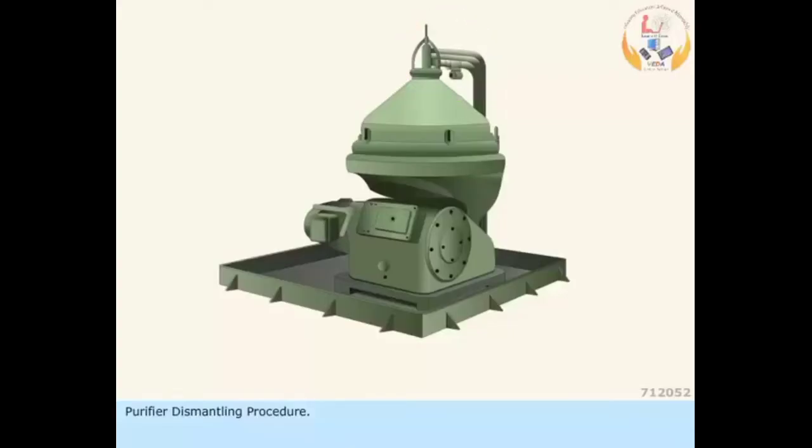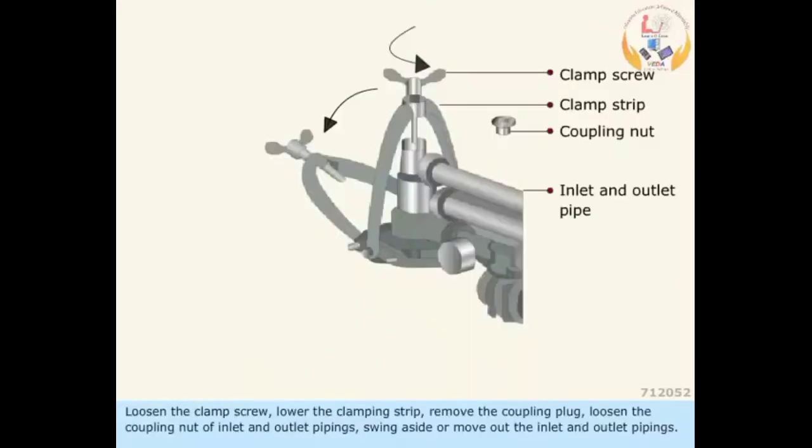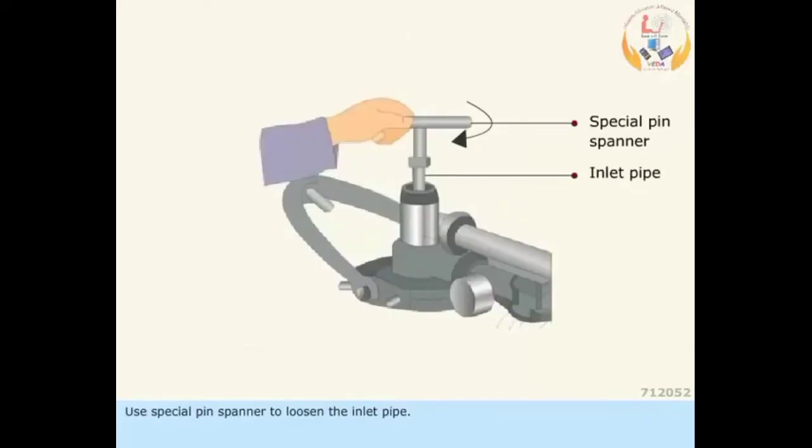Purifier dismantling procedure: loosen the clamp screw, lower the clamping strip, remove the coupling plug, and loosen the coupling nut of inlet and outlet pipings. Swing aside or move out the inlet and outlet pipings. Use a special pin spanner to loosen the inlet pipe.